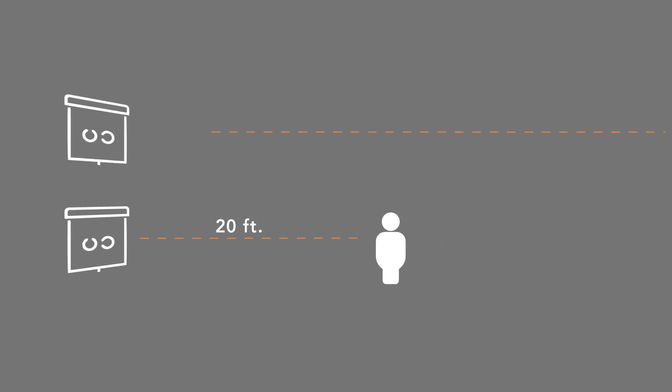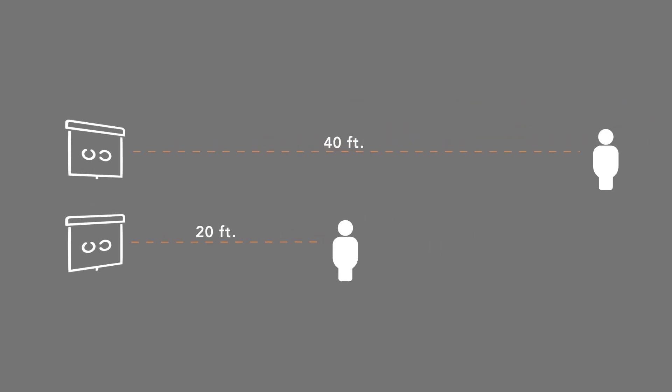Someone with 20-20 vision can read that same size text at 40 feet away. When you have those numbers that are bigger or smaller, you can have better than 20-20 vision — you could be 20-15 — which means you can see even better than a person who reads 20-20. Hopefully that clears things up and makes it easier to understand what that 20-20, or 20 over whatever number, really corresponds to and means.